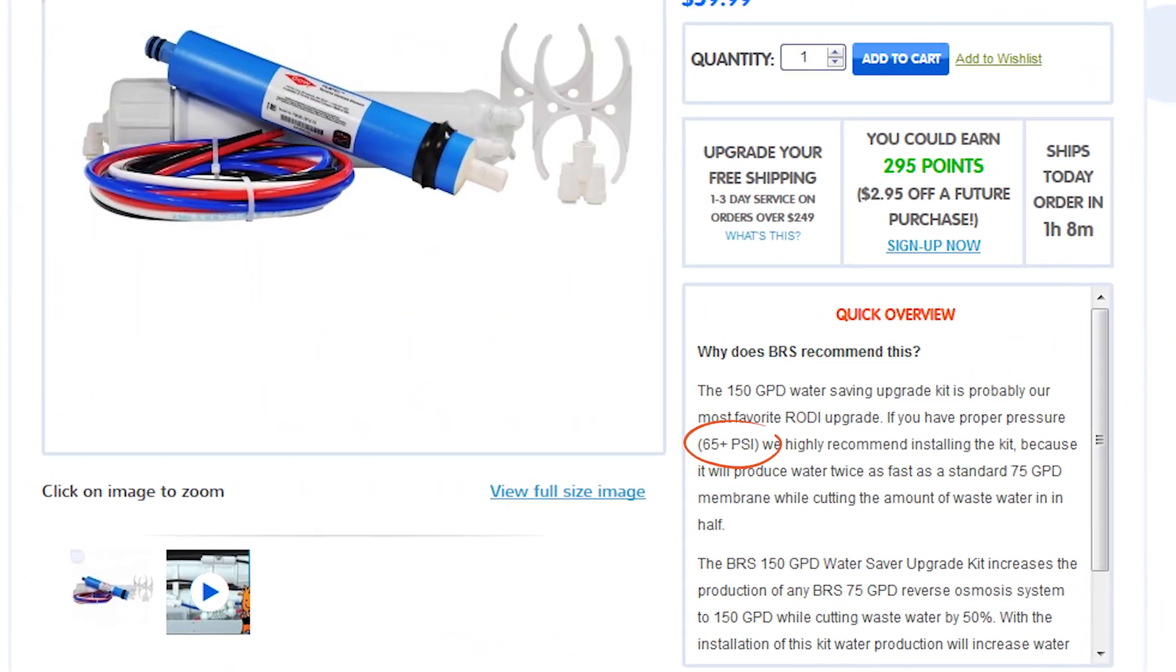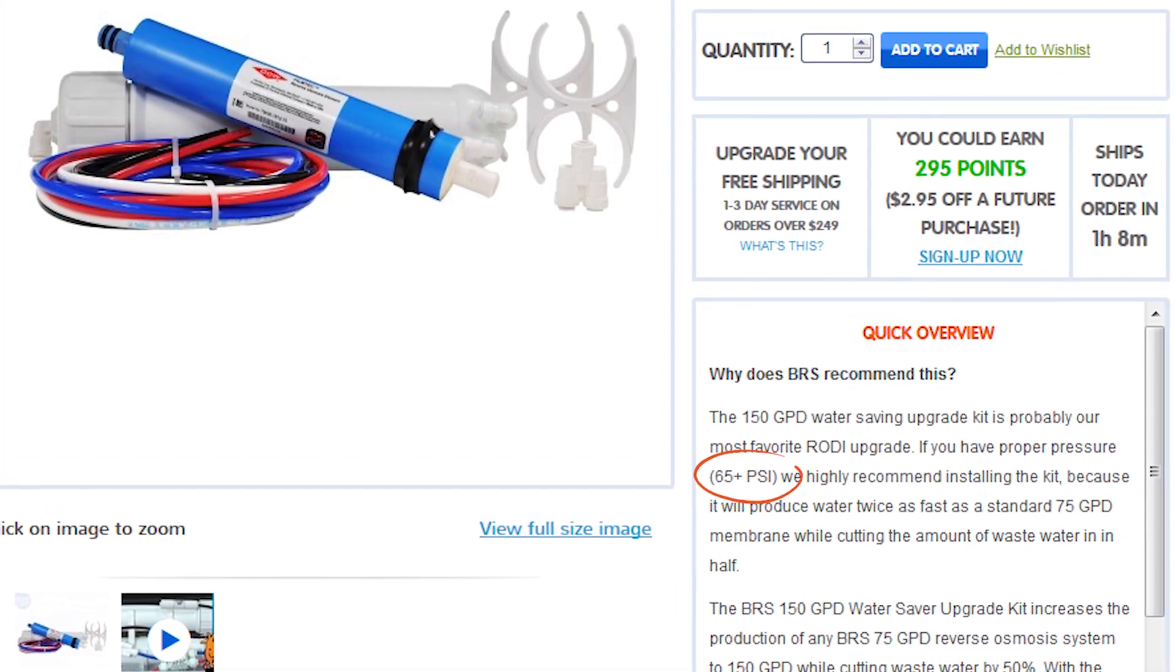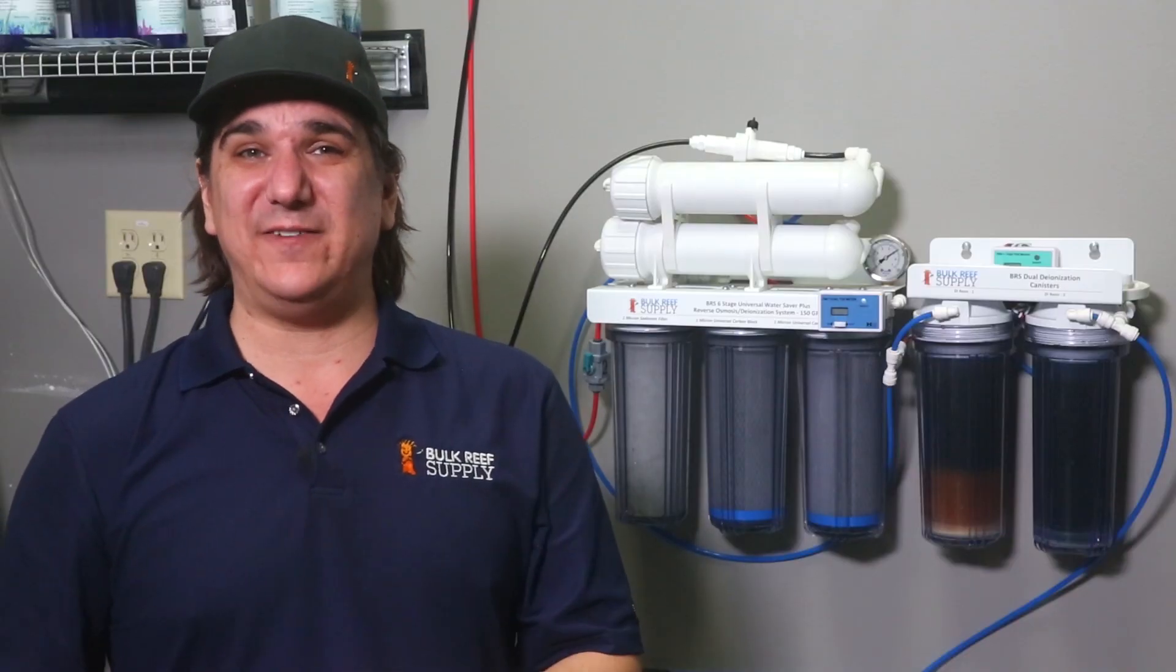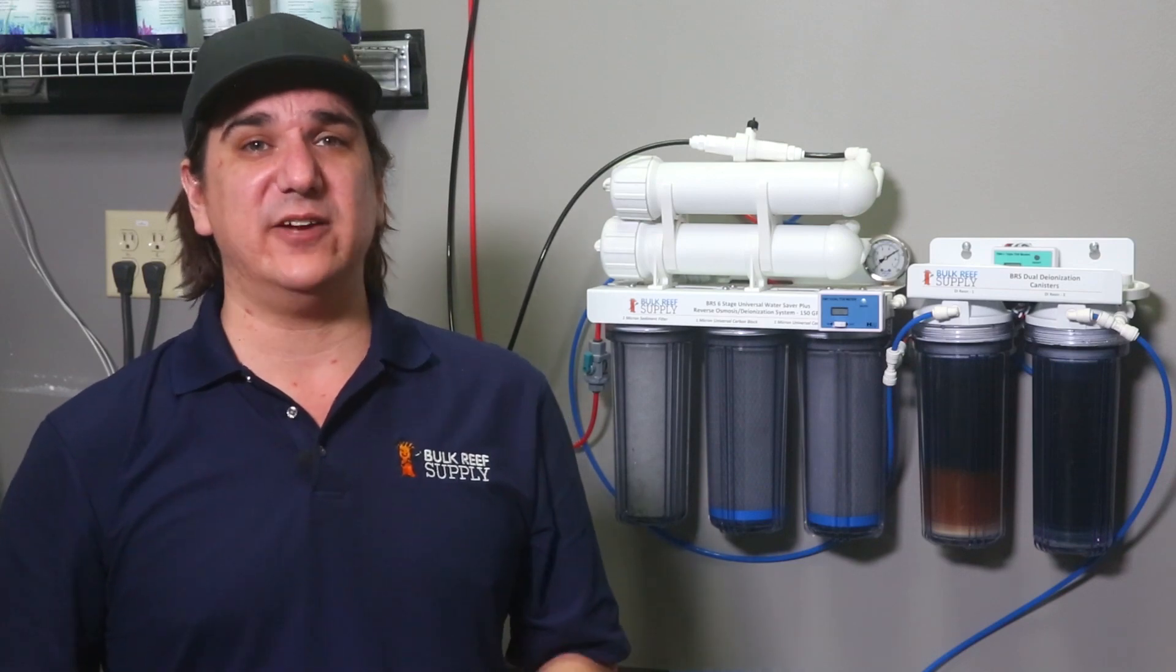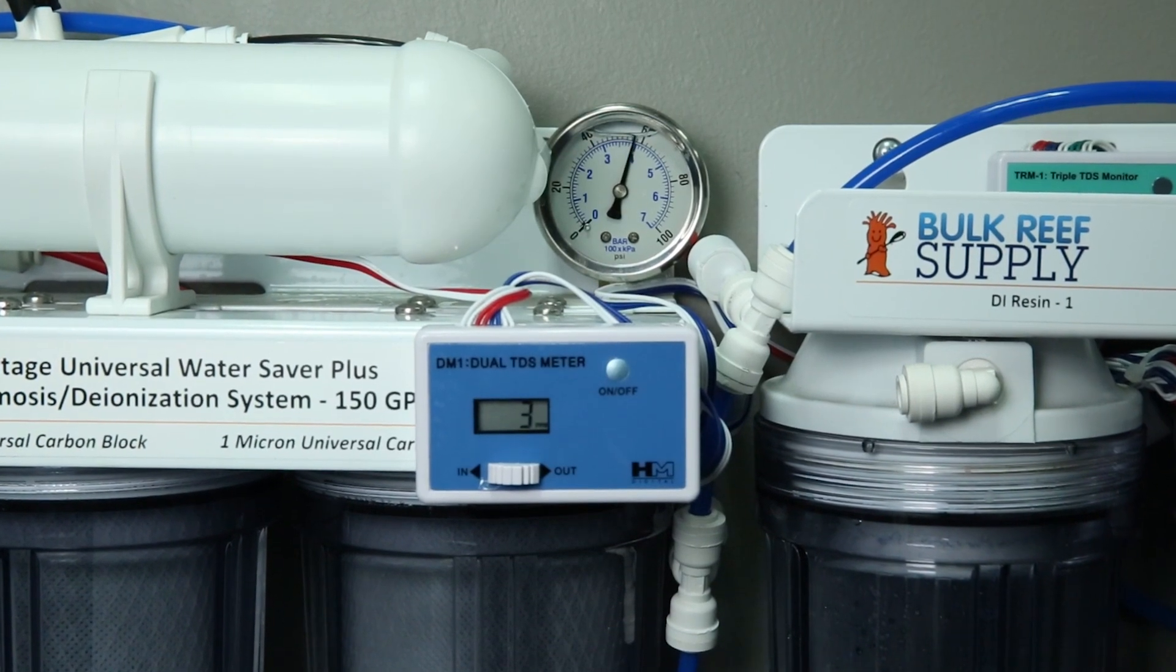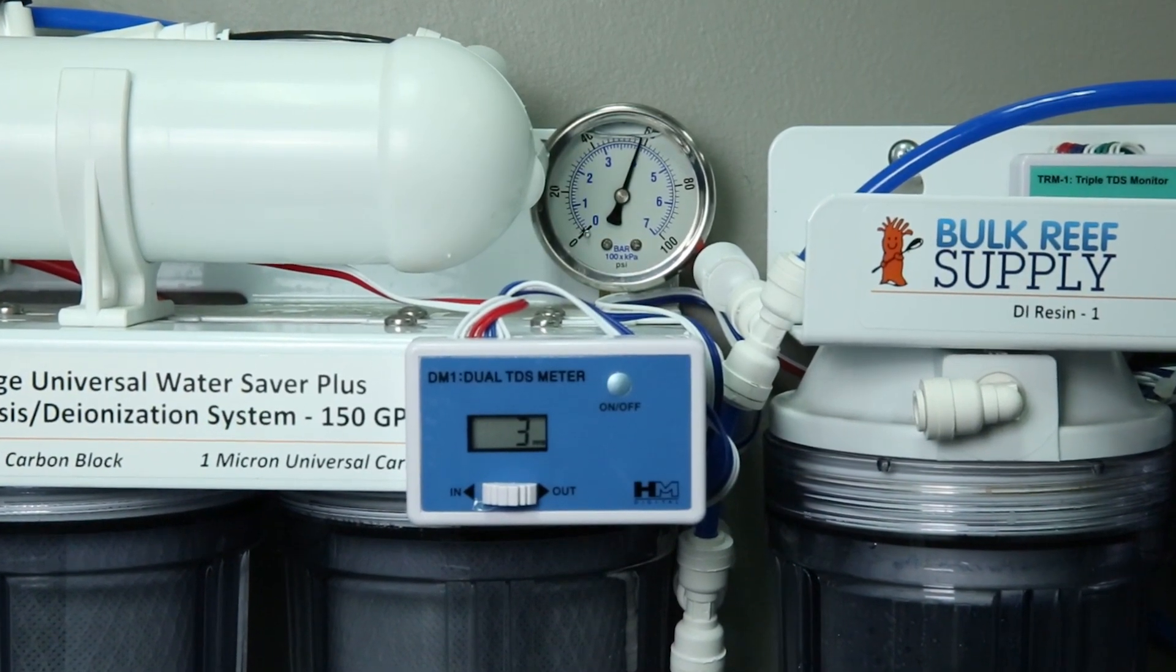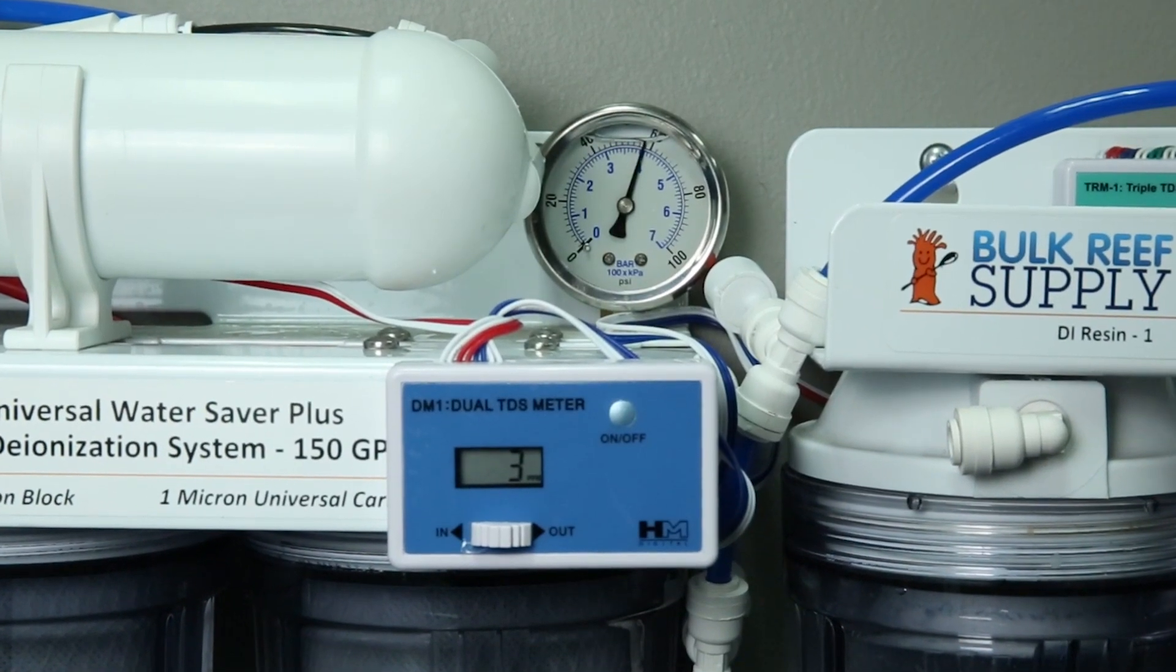You might notice that we recommend 65 PSI for the 150 gallon per day water saver upgrade kits we offer. Technically speaking, they only require 50 PSI, however that doesn't factor in things like cold water and a variety of other elements which can impact performance. Getting the system up to 60 or 65 PSI helps ensure the system will run optimally, which is important in a water saver setup. You can run this configuration at 50 PSI, but the product water might be slightly slower and the rejection might go down just a bit.